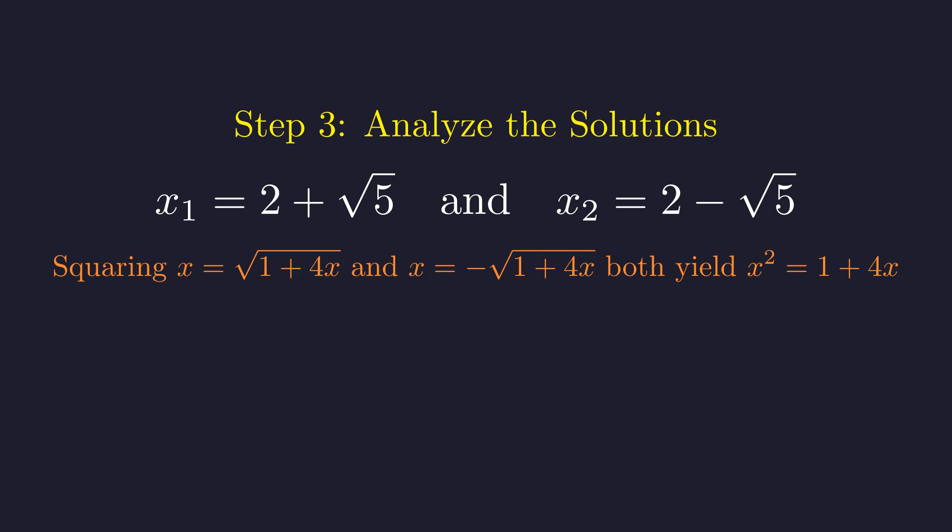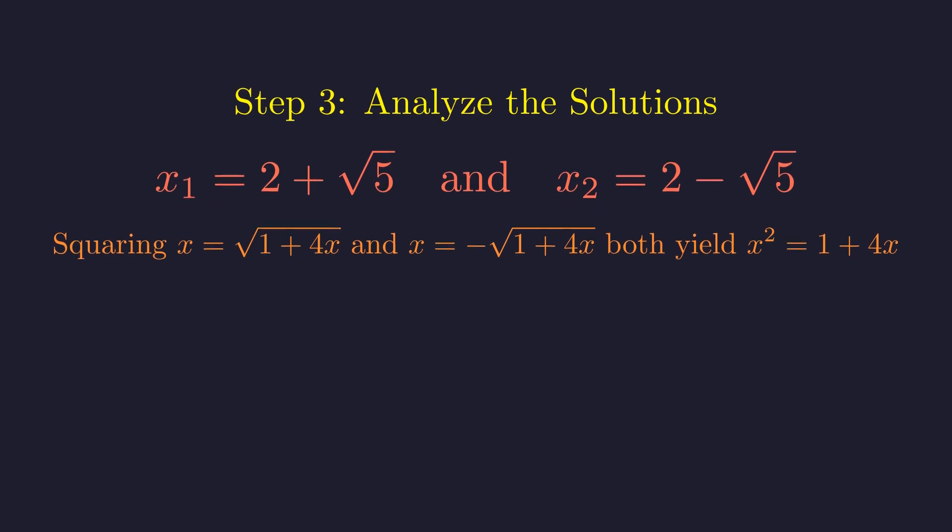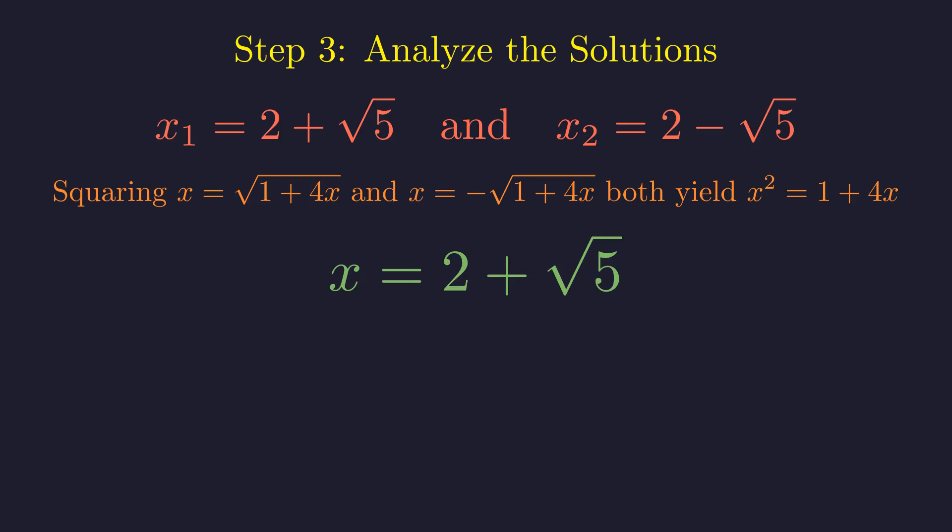So our algebra was actually solving both the original problem and a sneaky negative version at the same time. Now, 2 minus the square root of 5 is negative, so that can't be our answer. It's the solution to that negative twin problem we accidentally included. Which leaves us with our answer, 2 plus the square root of 5.